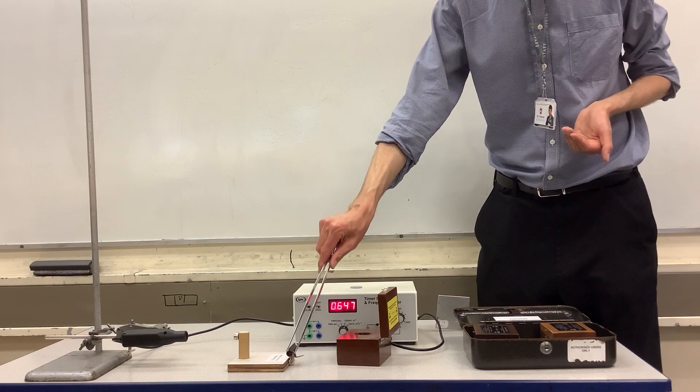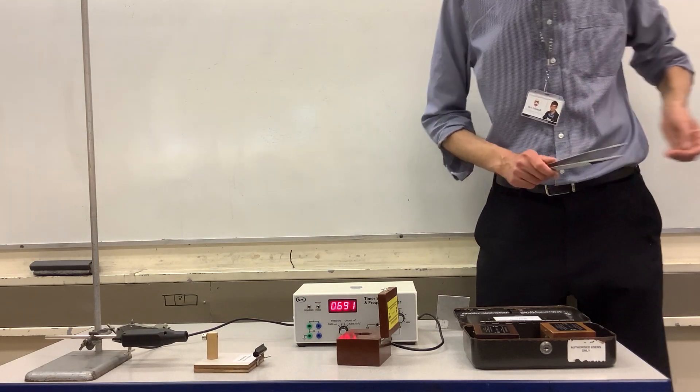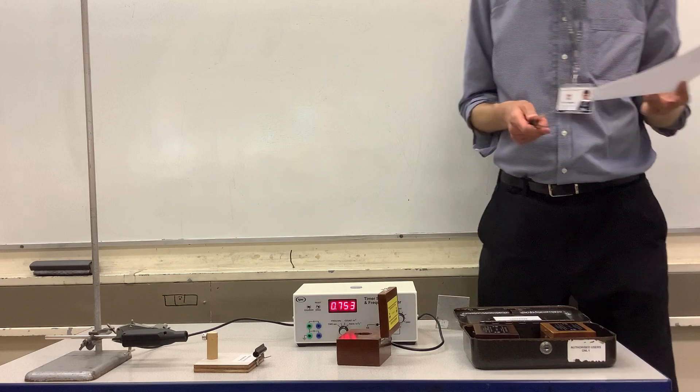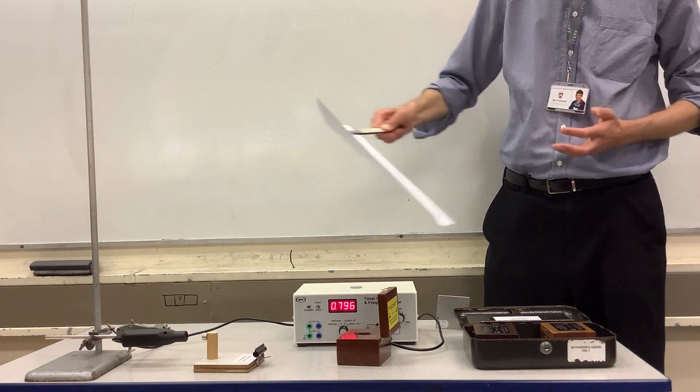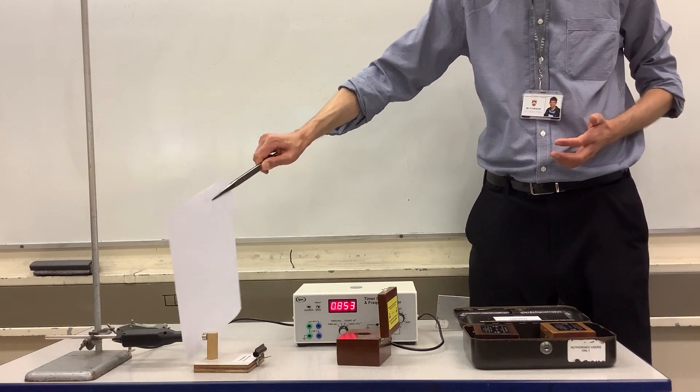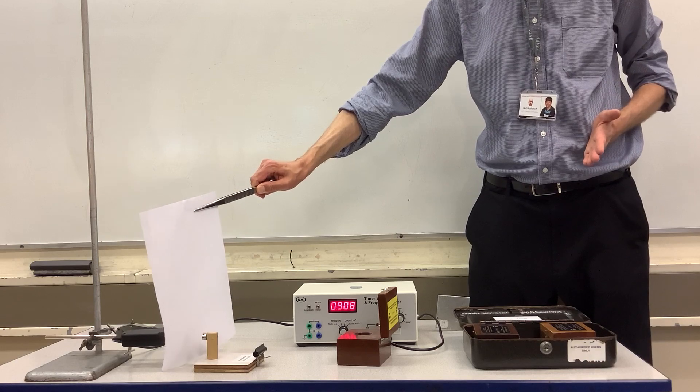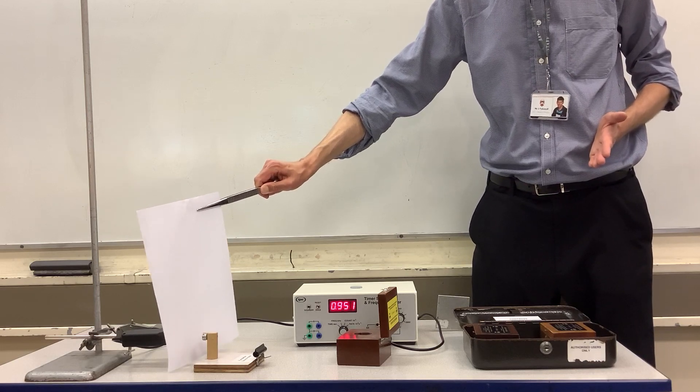Let's have a look at its penetrating power. If you remember, alpha radiation was stopped by paper. Does paper have any effect on gamma radiation? No, the gamma radiation passes straight through the paper.